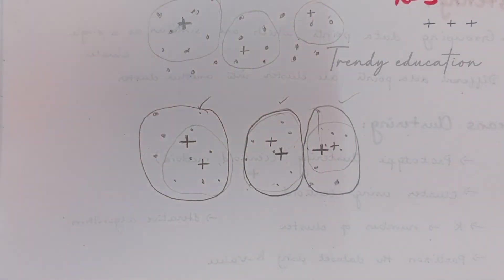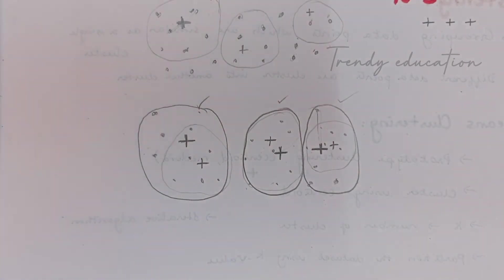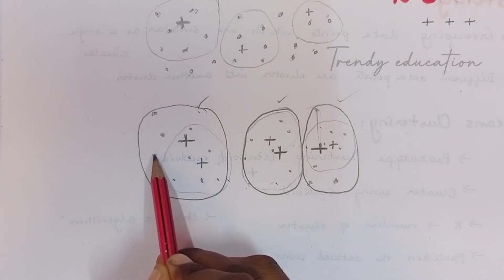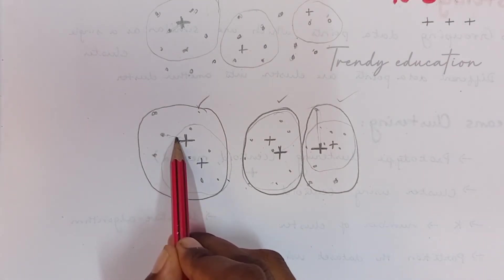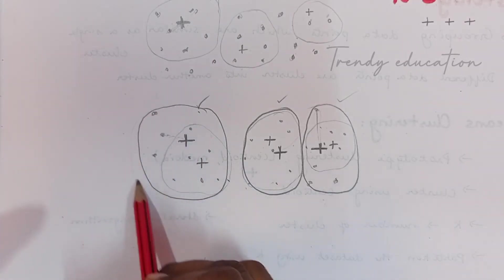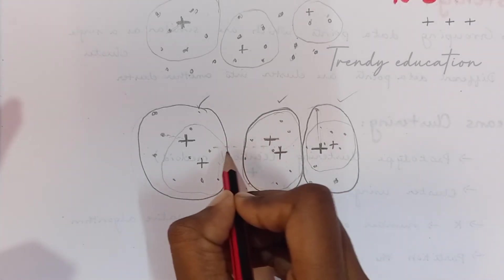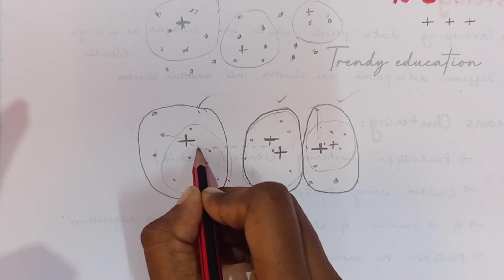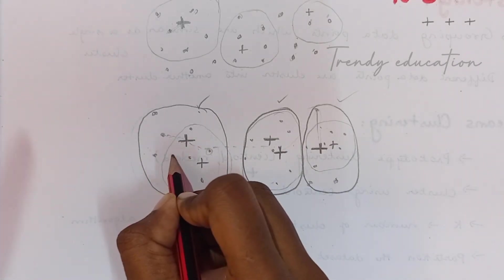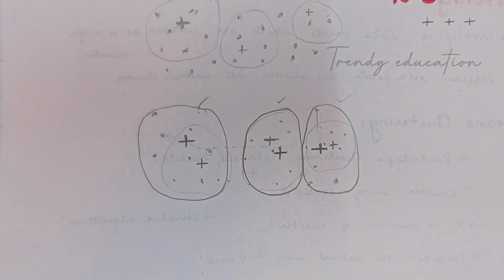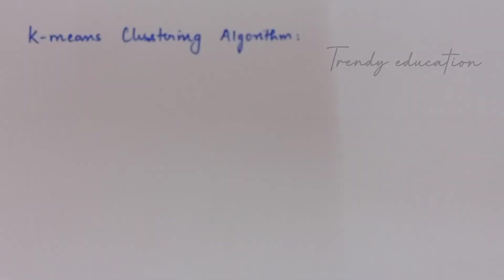So this is how k-means clustering works: randomly select centroids and cluster data points based on the shortest distance between each point and its nearest centroid. For example, if the distance to one centroid is shorter than to another, the point is clustered with the nearer one. Hope you understand k-means clustering now.